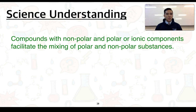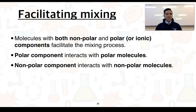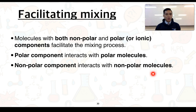Our next science understanding is that compounds with both non-polar and polar or ionic components can facilitate the mixing of polar and non-polar substances. There are numerous mixtures around us consisting of both polar and non-polar molecules, such as paints, cosmetic creams, milk, mayonnaise, and salad dressings. To allow these components to mix, we can incorporate a separate molecule made up of both components — its polar part interacts with polar molecules, and its non-polar part interacts with non-polar molecules.